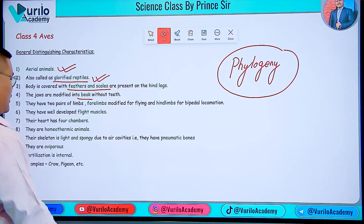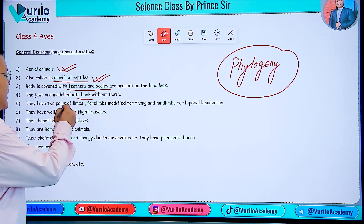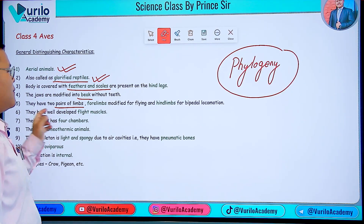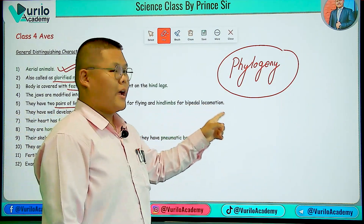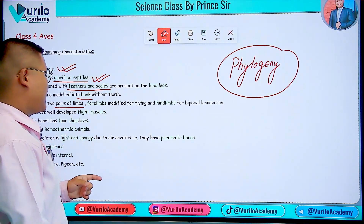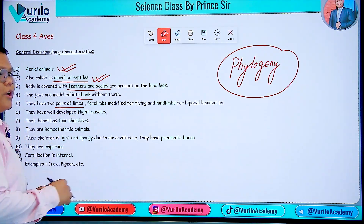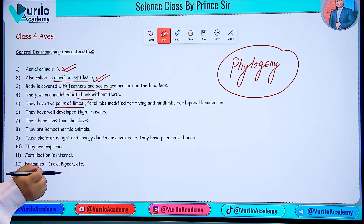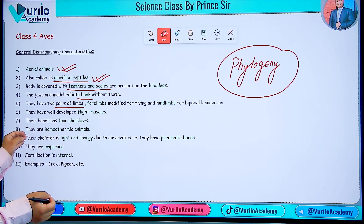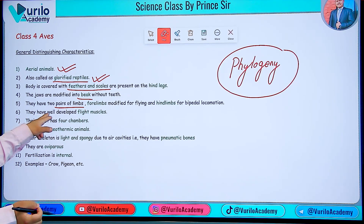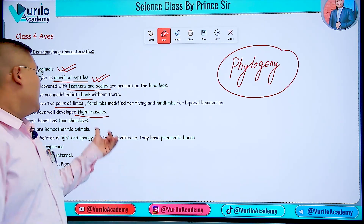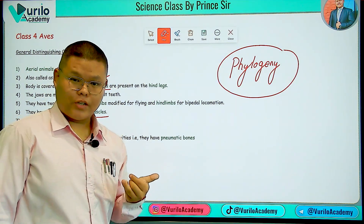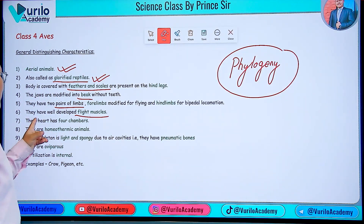Birds have two pairs of limbs. The forelimbs are modified for flying and the hind limbs are for bipedal locomotion. They also have well-developed flight muscles, which is an important point to remember. Flight muscles are present in birds.